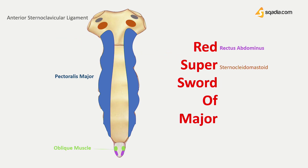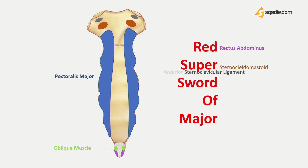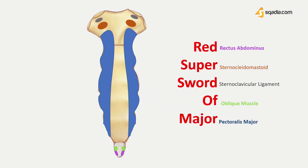Another S stands for sternoclavicular. O stands for the oblique muscles. And M is for the pectoralis major muscle.